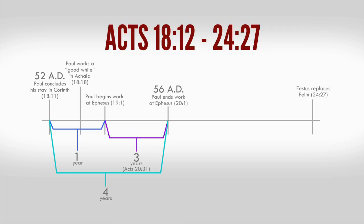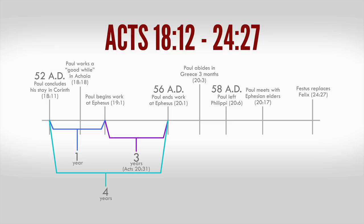Paul next traveled to Greece where he abode three months. He left Philippi around the end of our March, called the Days of Unleavened Bread, in chapter 20:6, probably in 58 AD. Paul next called for and met the Ephesian elders at Miletus, chapter 20:17, and then sailed to Caesarea, verse 21:8, where he is said to have stayed many days, verse 10, before he came again to Jerusalem, in 21:17, probably in 59 AD.